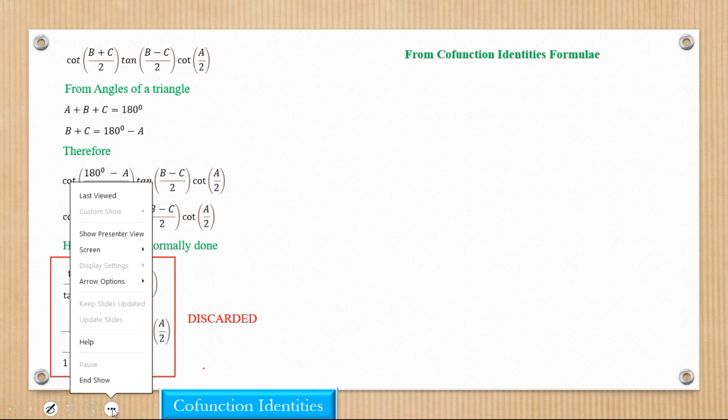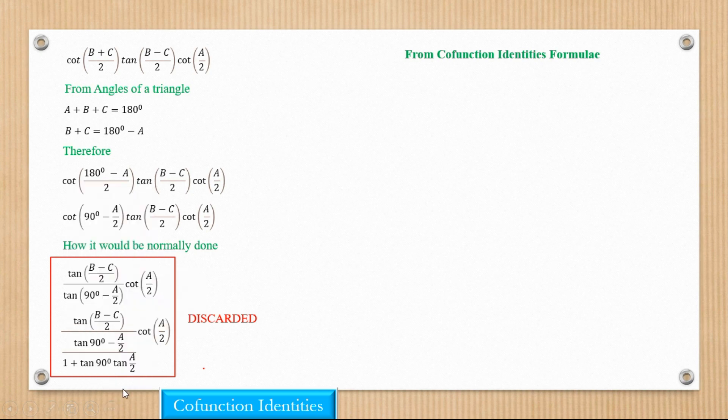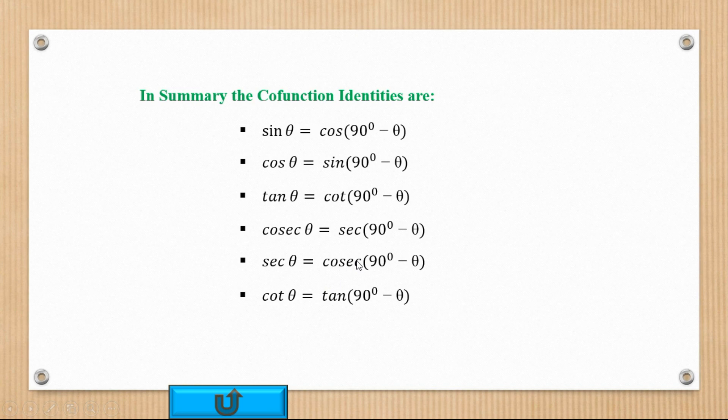All right. So I have my list of cofunction identities. So let's just take a look at them. A cot and a tan. So remember that when you look at the cot side, we know that a cot is equal to that.